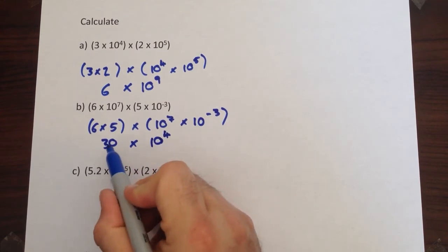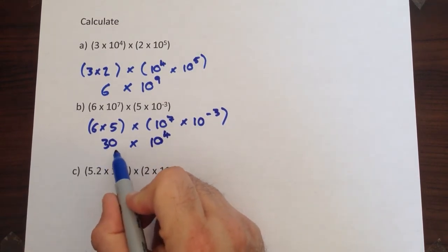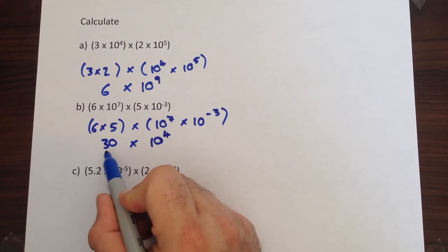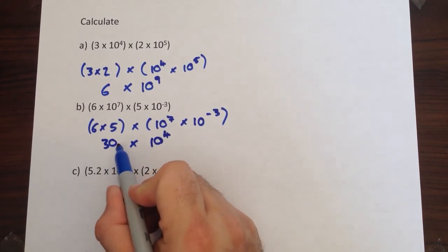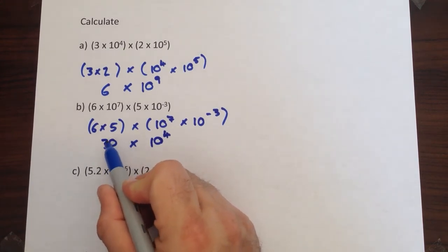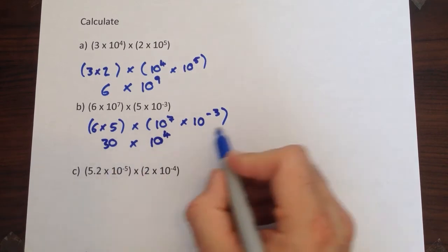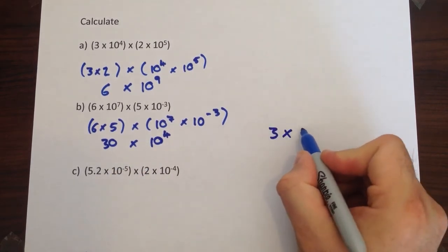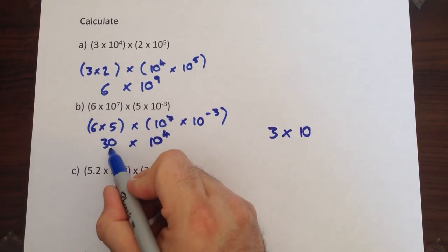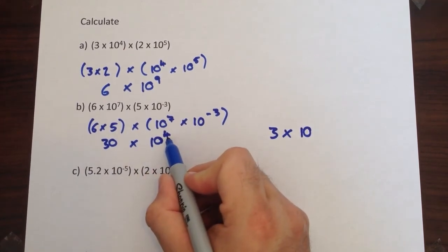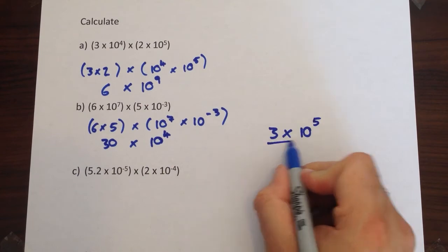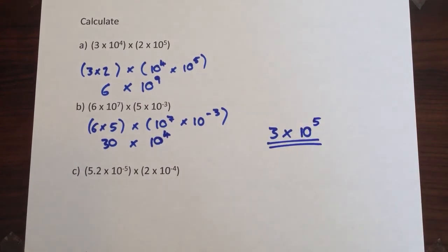Now we can't leave the answer like that because a standard form number must have the first number less than 10. So we need to move the decimal point in one place to make it smaller. Our first number is going to be 3. And because we've made this number smaller we need to compensate by increasing the power. So the power goes up by 1.